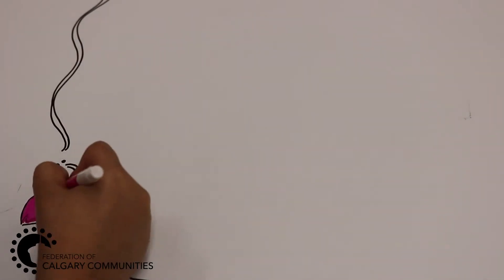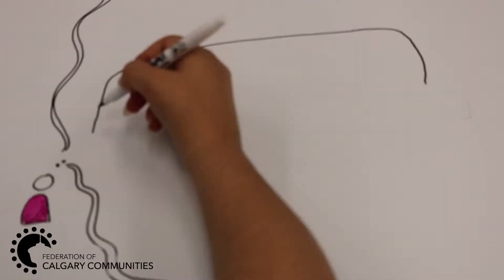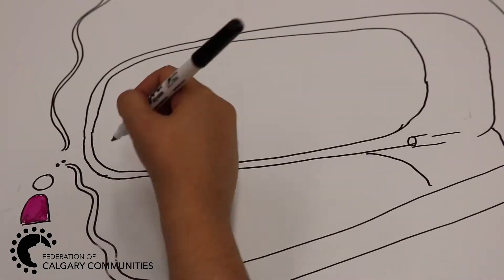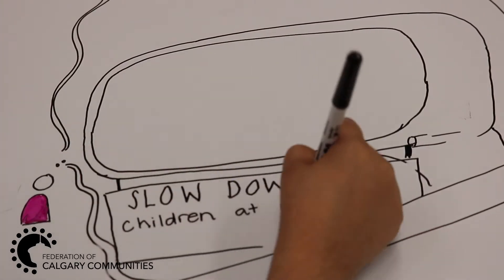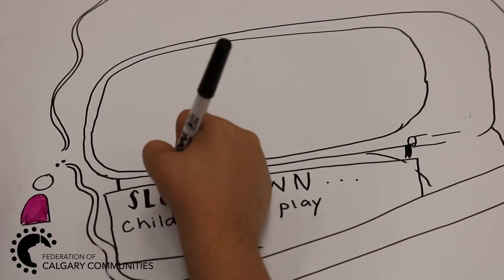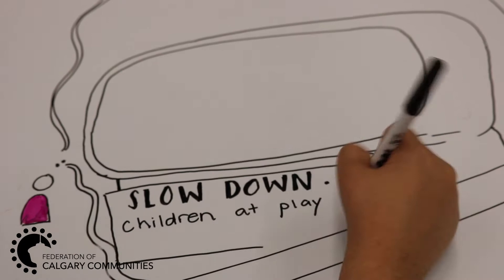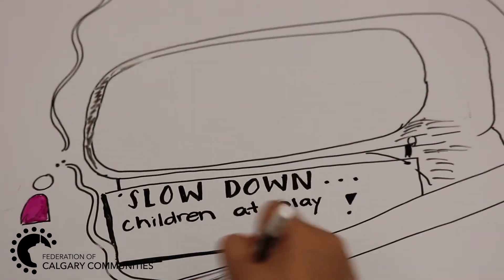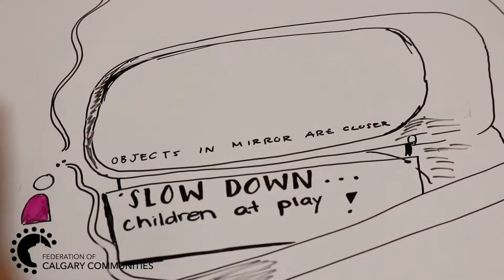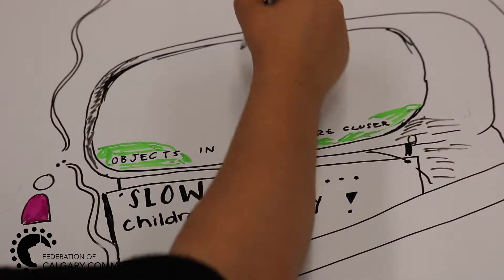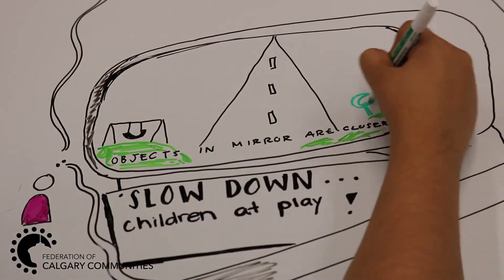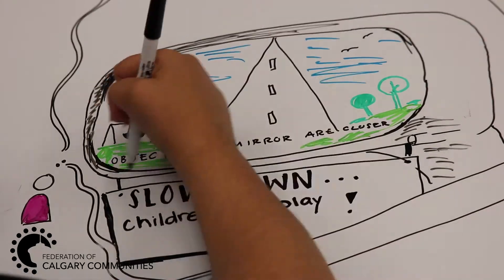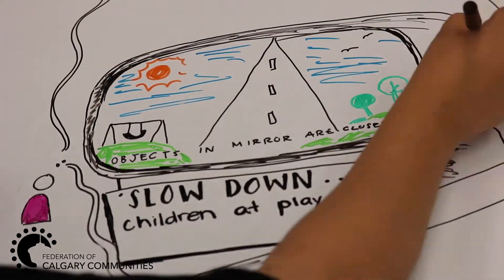Lucy mobilized her neighbors. The objective was a slow-down campaign. Many concerned residents took action and put stickers on their cars letting drivers know not to speed. The issue of speeding became a community concern that was addressed by residents in the community. Lucy is grateful that her community association was her greatest resource.